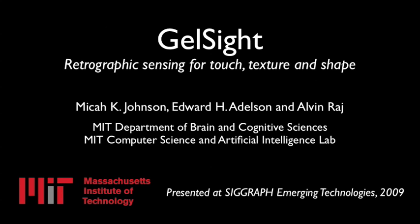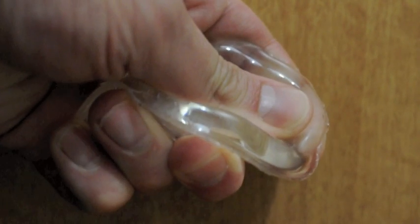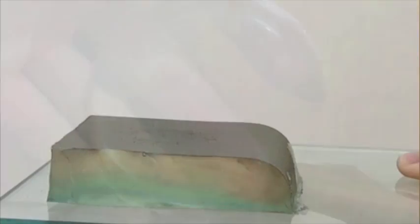GelSight is a novel system for measuring surface texture and shape. At the heart of the system is a sensor made of clear gel with a painted reflective skin.